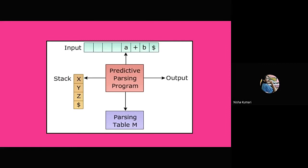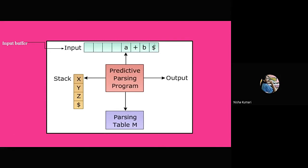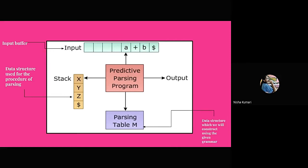This is the diagrammatic representation of the important requirements for LL1 parsing. Here is the input buffer, and we can see that it always ends with the dollar sign, which indicates that the input has come to an end. The stack is the data structure used for the procedure of parsing. The parsing table is the data structure which we construct using the given grammar. The predictive parsing program is nothing but the LL1 parsing algorithm — the process that we do for LL1 parsing.